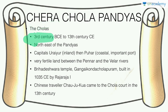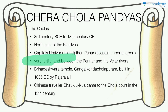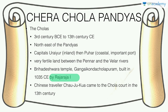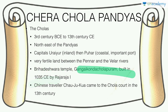The Cholas ruled from the 3rd century BCE to the 13th century CE — about 1,100 years. They were northeast of the Pandyas, with two capitals: Uraiyur (inland) and Puhar (coastal), in the fertile land between the Pennar and Velar rivers. Key things to know about the Cholas: the Brihadeeswara Temple at Gangaikonda Cholapuram, built in 1035 by Raja Raja. Study its history, geography, architecture, and art thoroughly. Also note that the Chinese traveler Zhao Rugua came to the Chola court in the 13th century.